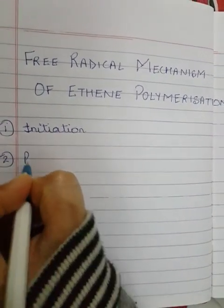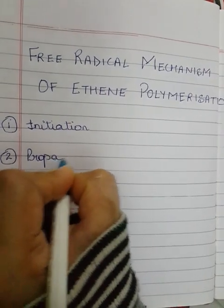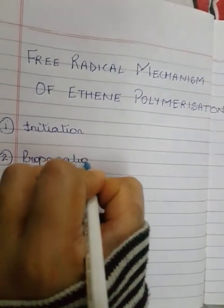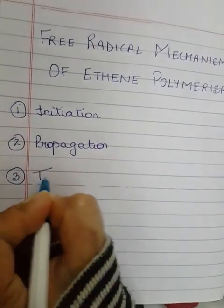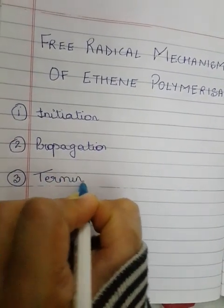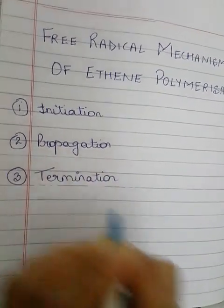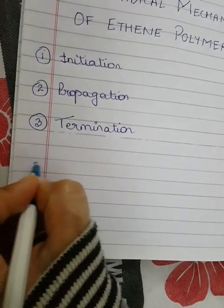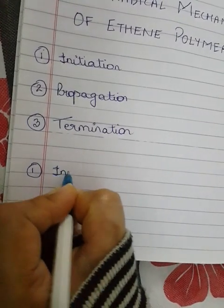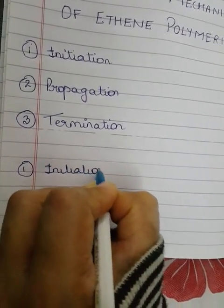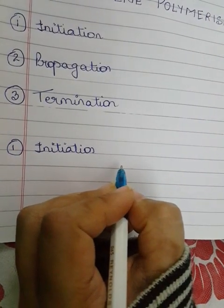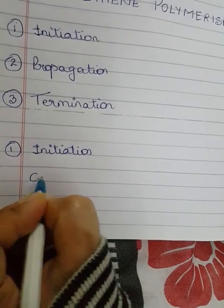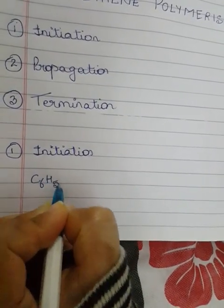Now first step, we have to initiate the reaction. For initiation of free radical we usually take benzoyl peroxide. The structure of benzoyl peroxide is this.